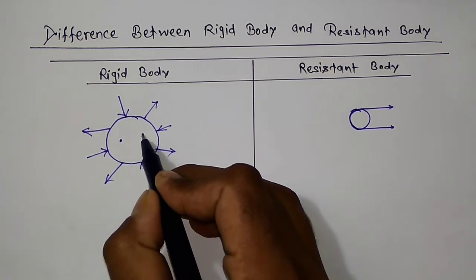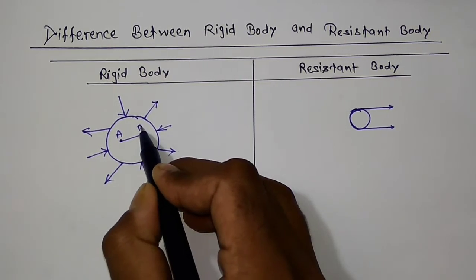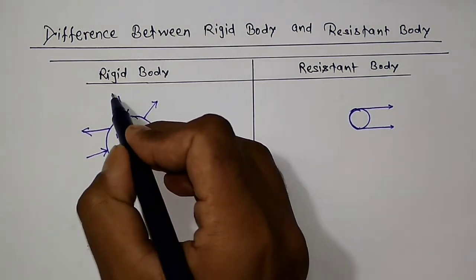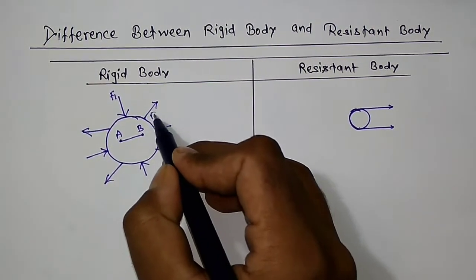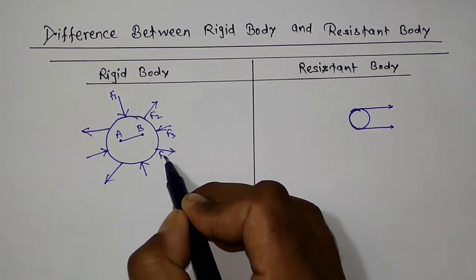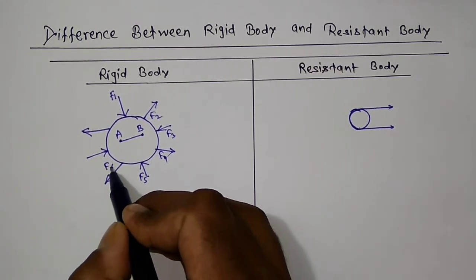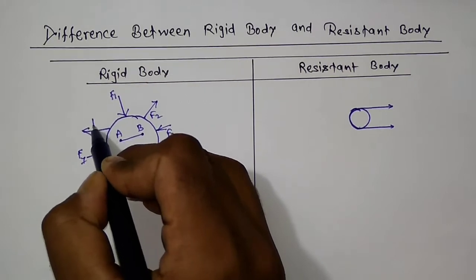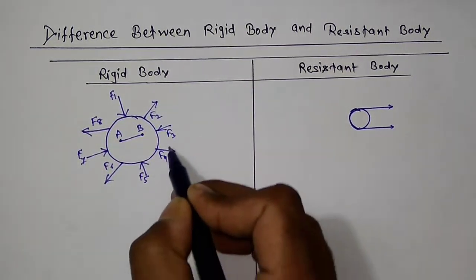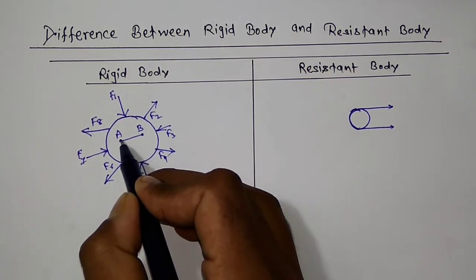Let us consider two points inside the body: point A and point B. After applying the forces — F1, F2, F3, F4, F5, F6, F7, F8 — if all these forces are applied on a body, and if the distance between A and B does not change...